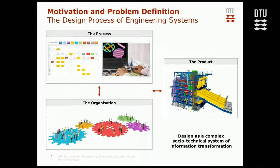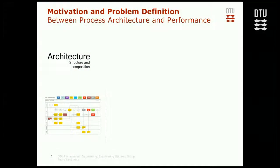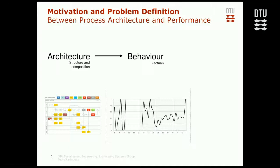What makes this difficult is that these three domains are interdependent, each with their own architecture and dependencies within and between them. In this sense, we can think of design as a complex sociotechnical system of information transformation — we move from sometimes ill-defined requirements and exchange and transform information to turn it into detailed designs for the final product. Talking about the architecture of these domains and focusing in particular on the process, when we start analyzing the architecture, we see that in the first moment of the project we can plan the architecture — we can see a logical relationship between tasks and activities in terms of structure, composition, and resource allocation.